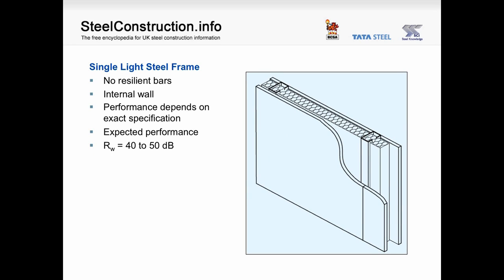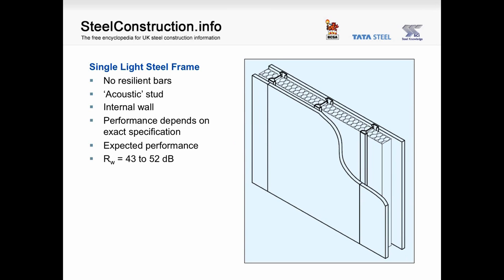This type of wall is suitable for an internal wall — the performance is not sufficient for a separating wall. The construction includes light steel vertical studs with insulation between the studs, no resilient bar, and only one layer of plasterboard on each side. The expected performance is an RW of between 40 and 50. A similar wall incorporating an acoustic stud — with a specially designed web to reduce sound passage — can achieve RW 43 to 52 dB.